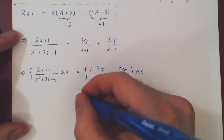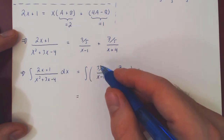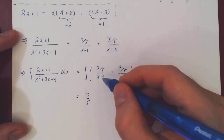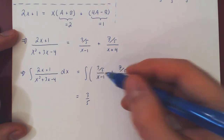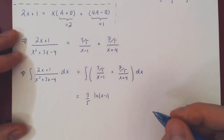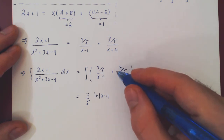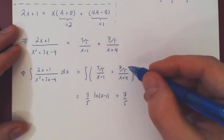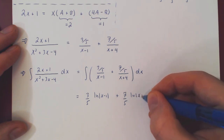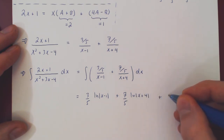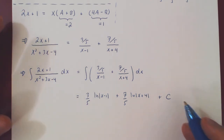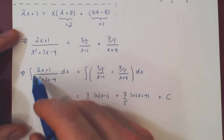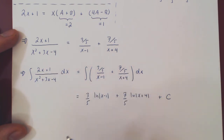The integration is straightforward. The 3/5 is a constant multiple, so it factors out, and the integral of 1 over x minus 1 is the natural log of the absolute value of x minus 1. Plus 7/5 factors out, and the integral of 1 over x plus 4 is the natural log of the absolute value of x plus 4. We add the arbitrary constant of integration. The integration becomes easy once we've decomposed the single rational function into a sum of two partial fractions — this is the beauty of the method of partial fractions.